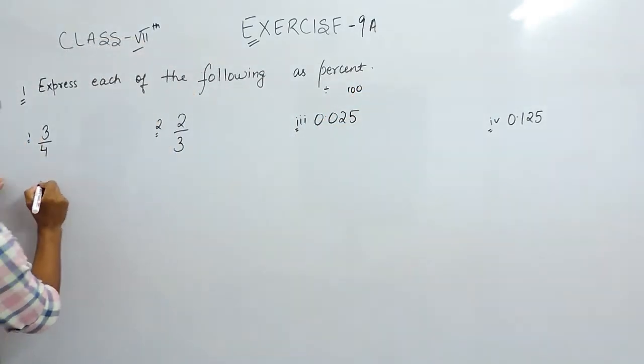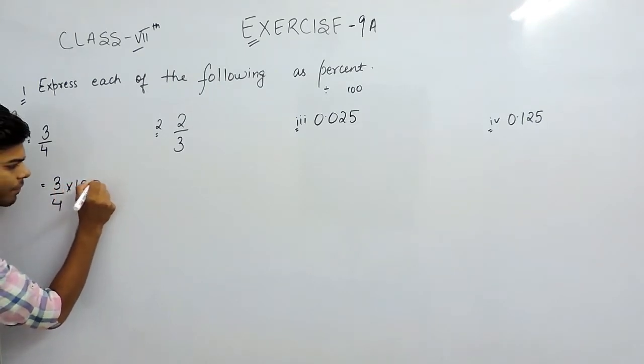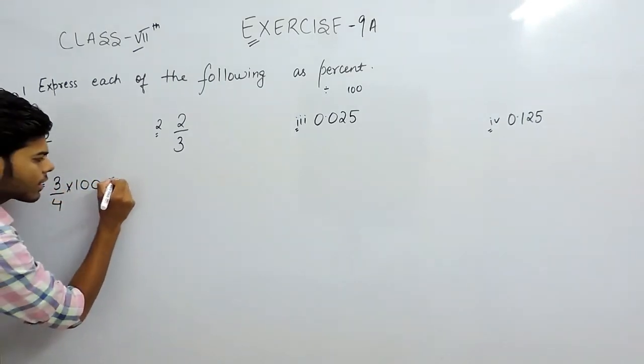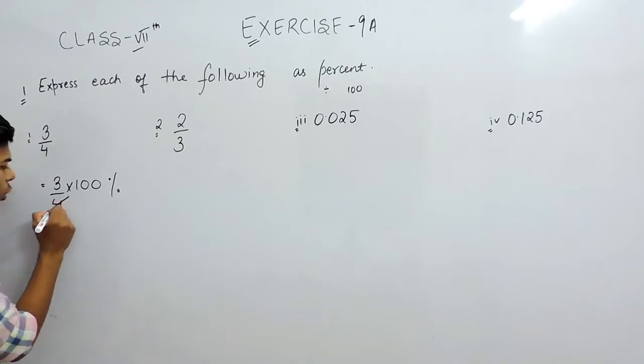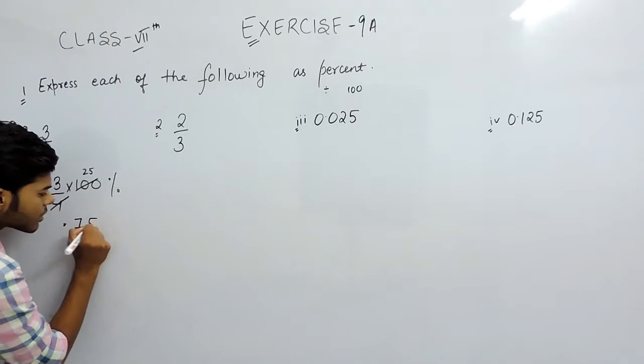In these types of questions, we simply multiply 100 percent with the given quantity. So this will be 3/4 times 100 percent, which gives us 75 percent.